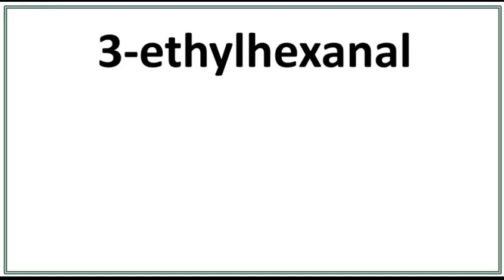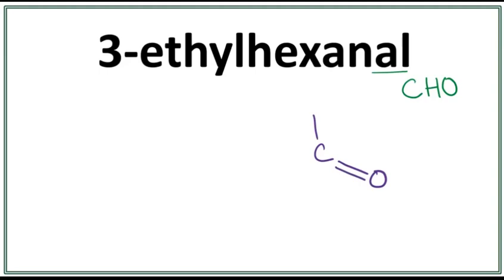Let's draw the structure for 3-ethyl hexanal. The 'al' here means that this is an aldehyde. An aldehyde has a functional group of CHO. We have carbon having a double bond with oxygen and a single bond with hydrogen.